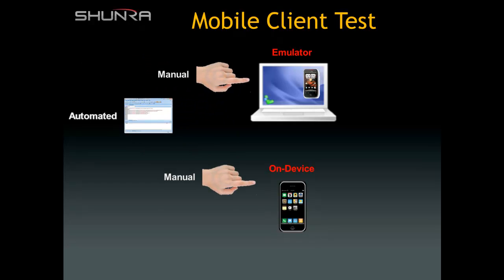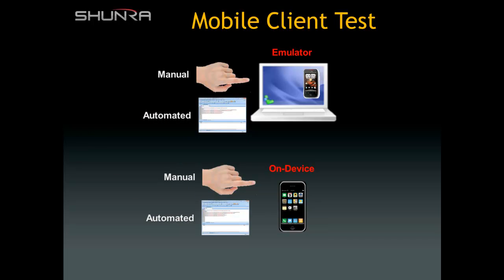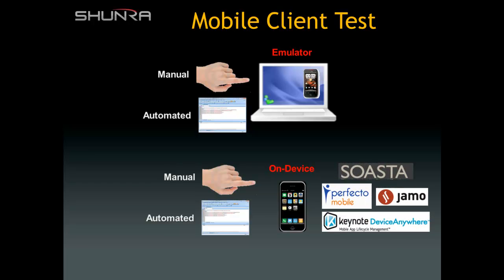Both for emulator or on-device testing, manual execution means clicking on the interface to exercise the required functionality. For mobile emulators, there are many automation solutions which can be used to script user interactions, including HP Unified Functional Test (formerly QTP), Selenium, IBM Rational Tester, Silk Test, and many more. When automating tests on actual mobile devices, however, there are a smaller number of solutions which record and playback user interactions, including touching the screen, pressing buttons, and so on.